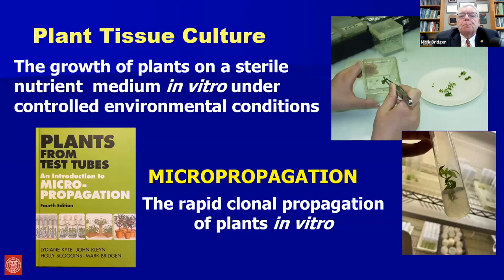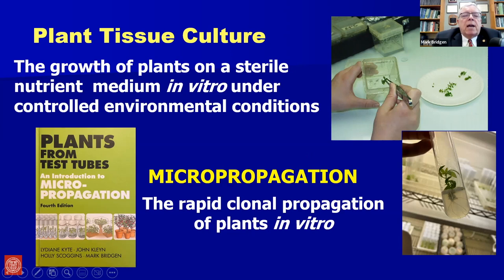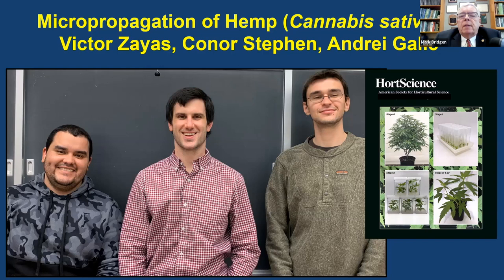Now let's talk about micropropagation, which is part of plant tissue culture. Plant tissue culture is essentially growing plants on a sterile nutrient medium in vitro under controlled conditions. There are many things you can do with plant tissue culture — embryo rescue, mutation breeding, anther culture — but for hemp today, we're going to focus on micropropagation, which is essentially like taking stem cuttings but in a sterile in vitro environment.